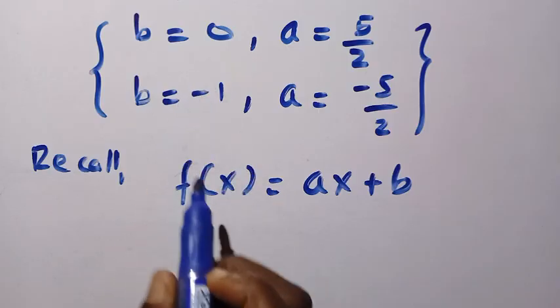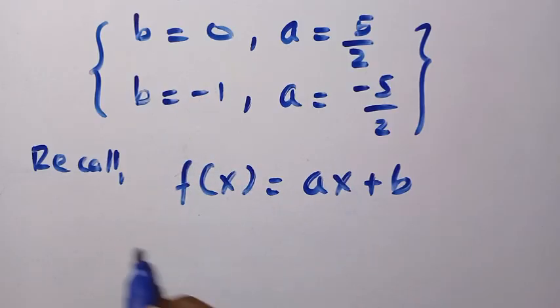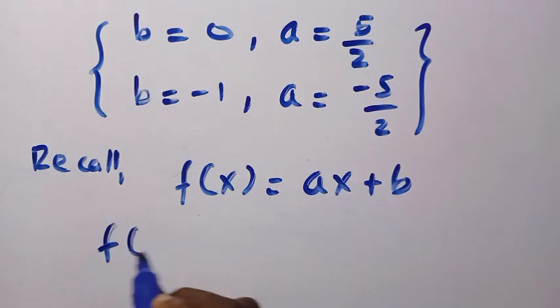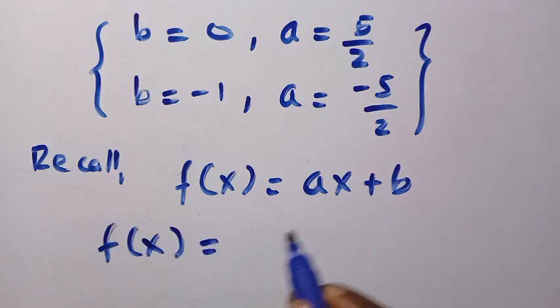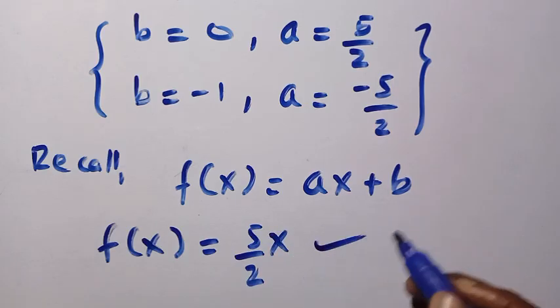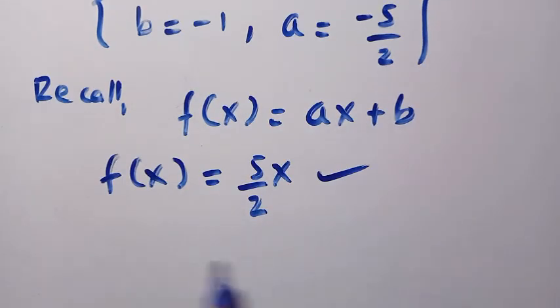So for the first one, if b equals 0, a will be equals 5 over 2. At b equals 0, a is 5 over 2. Substitute here. We then have f(x) equals a is 5 over 2 x, then plus 0. So plus 0 is gone. So here is the first answer for f(x).